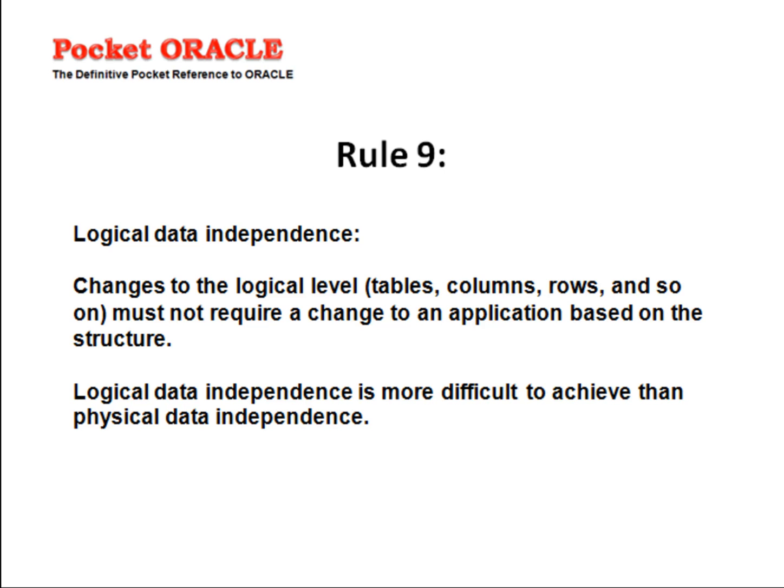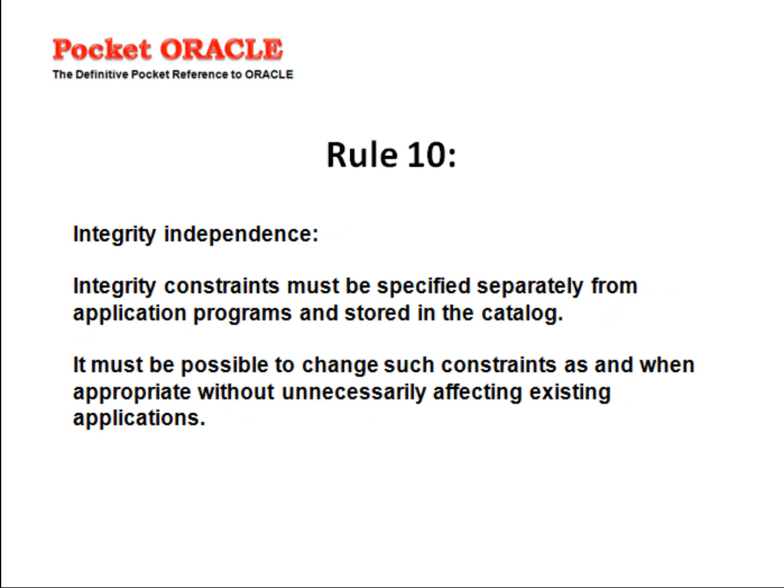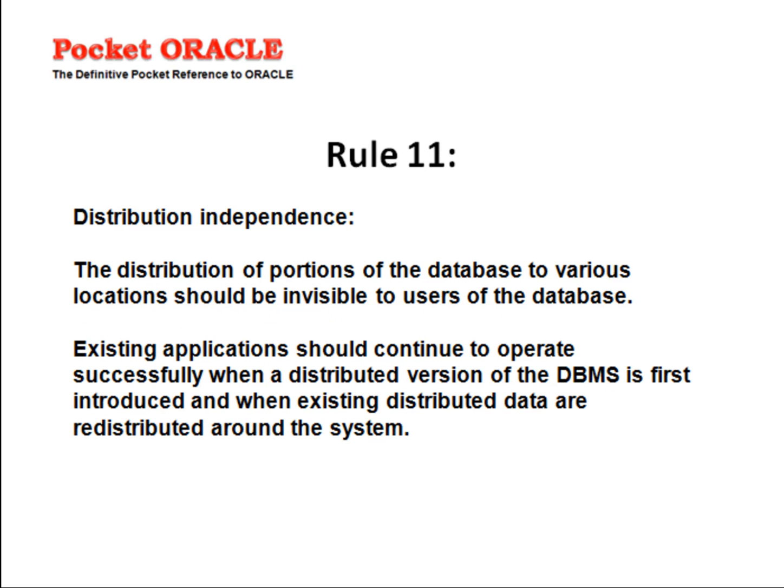Rule 9: Logical Data Independence. Changes to the logical level — tables, columns, rows, and so on — must not require a change to an application based on the structure. Logical data independence is more difficult to achieve than physical data independence. Rule 10: Integrity Independence. Integrity constraints must be specified separately from application programs and stored in the catalog.